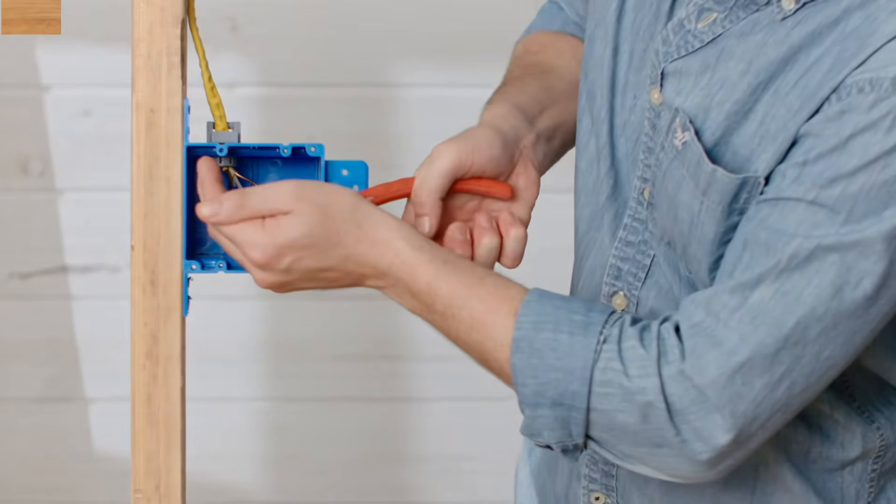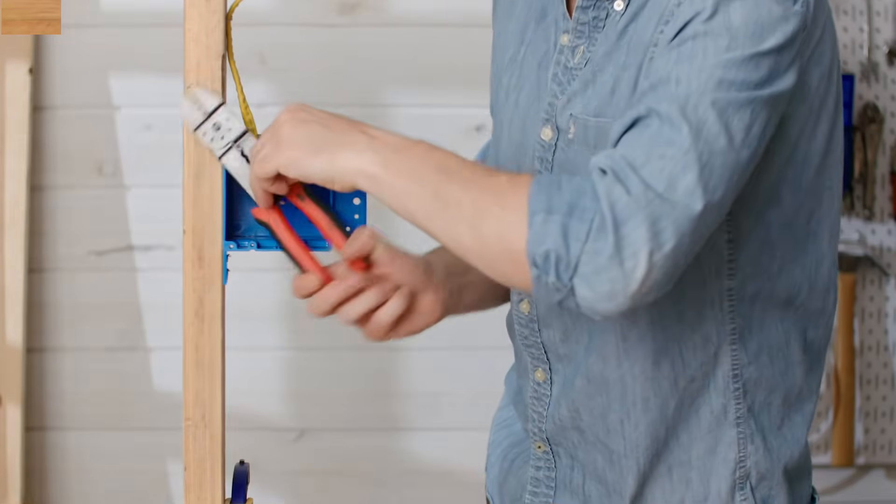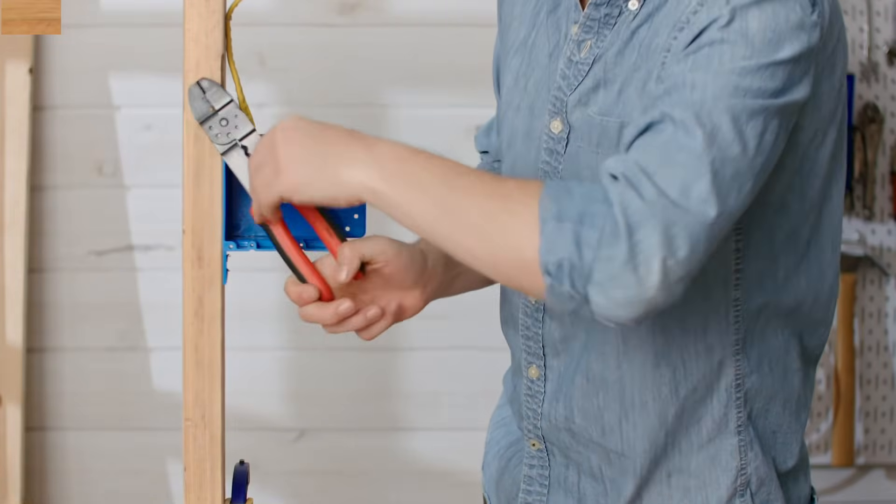Now it's time to trim the wires and clean them up. Cut off any twisted or damaged bare ends, then use a wire stripper to remove about half an inch of the plastic insulation.